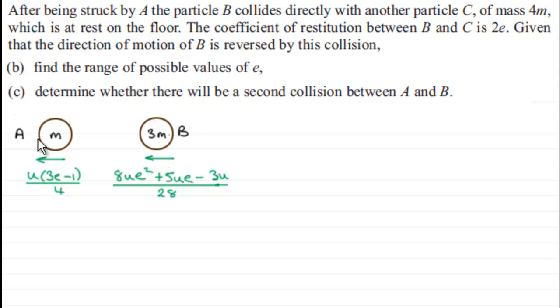that after A hit B, it was moving with this speed to the left, U multiplied by 3E minus 1 all over 4.